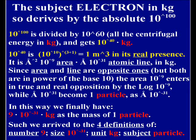The subject electron in kilograms so derives by the absolute 10 rise to 100. 10 rise to 100 is divided by 10 rise to 60, which is all the centrifugal energy in kilograms, and gets 10 rise to 40 in kilograms.